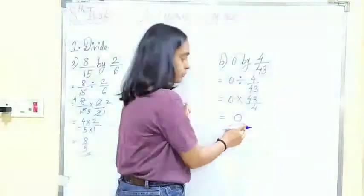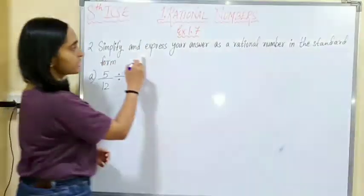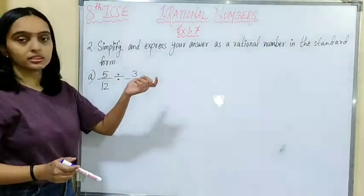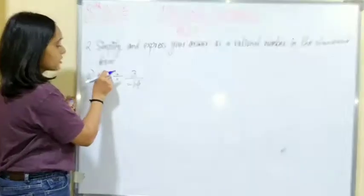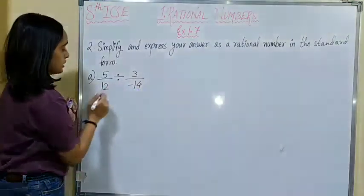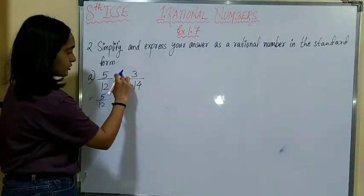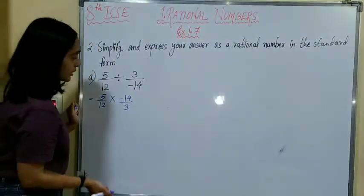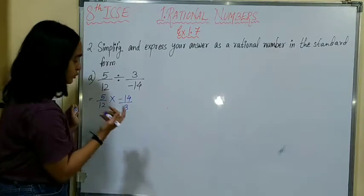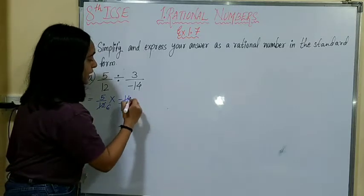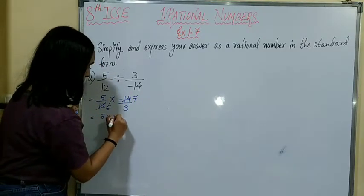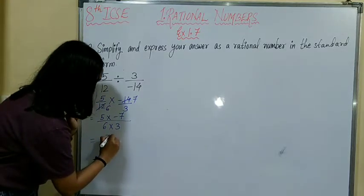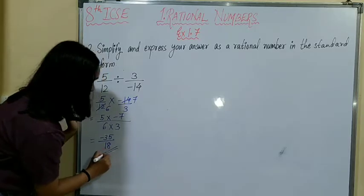The second question: simplify and express your answer as a rational number in standard form. The question is 5 upon 12 divided by 3 upon minus 14. So 5 upon 12 stays as it is; division is replaced by multiplication and we take the reciprocal of the second rational number, giving minus 14 upon 3. We can reduce: 12 and 14 are both divisible by 2, giving 6 and 7 respectively. So we get 5 multiplied by minus 7 upon 6 multiplied by 3, which equals minus 35 upon 18 as the final answer.